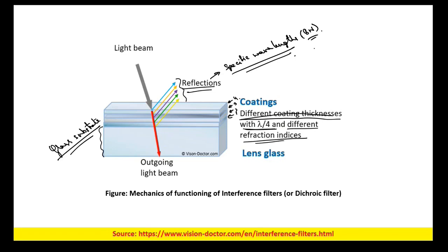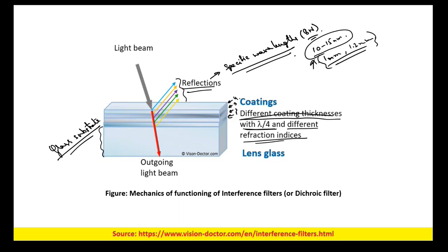There will be some dispersion — say 10 to 15 nanometers — so we cannot get a resolution of 1 nanometer practically. Whatever polychromatic system you develop, there will be some dispersion; however, you can control this using different types of filters including the dichroic filter, which provides the best method to separate different wavelengths with minimum dispersion.